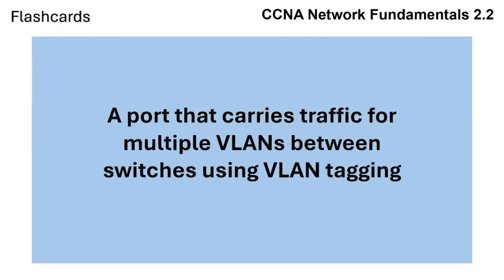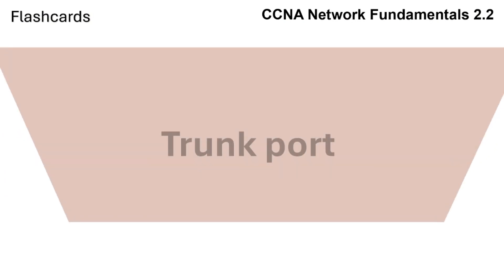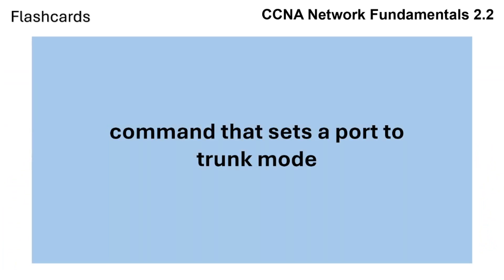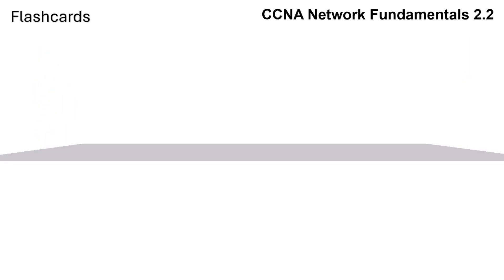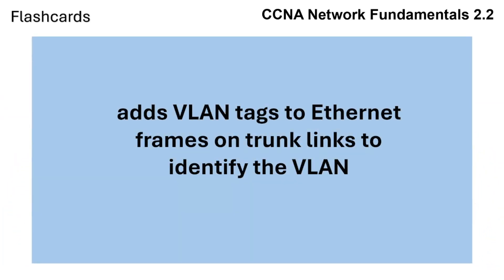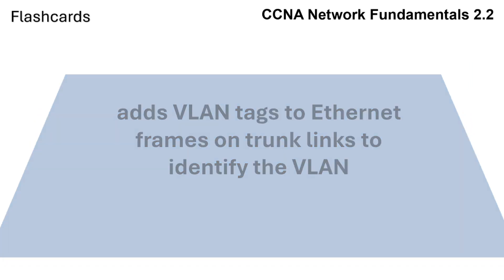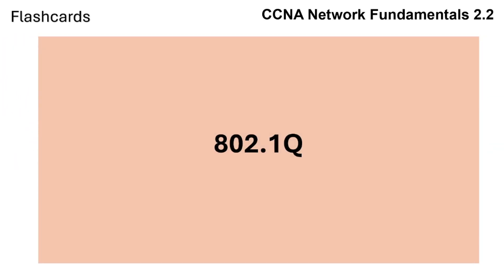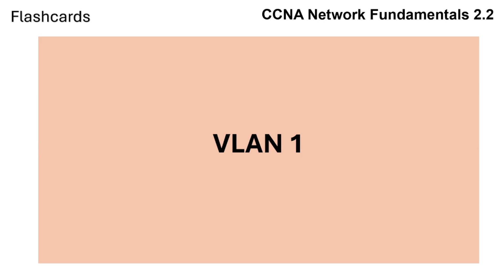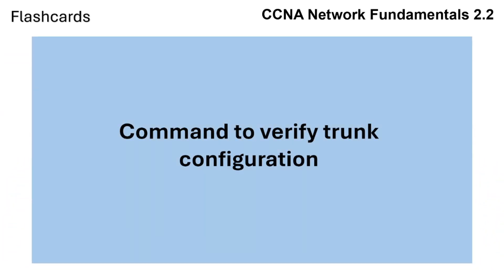Review: A port that carries traffic for multiple VLANs between switches using VLAN tagging. The command that sets a port to trunk mode. Adds VLAN tags to Ethernet frames on trunk links to identify the VLAN. The default native VLAN on Cisco switches. Command to verify trunk configuration.